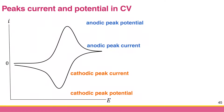Last time we talked about the origin of the cyclic voltammogram shape, which is the interplay between diffusion control and the applied potential. So here we can learn how to analyze the cyclic voltammogram shape.